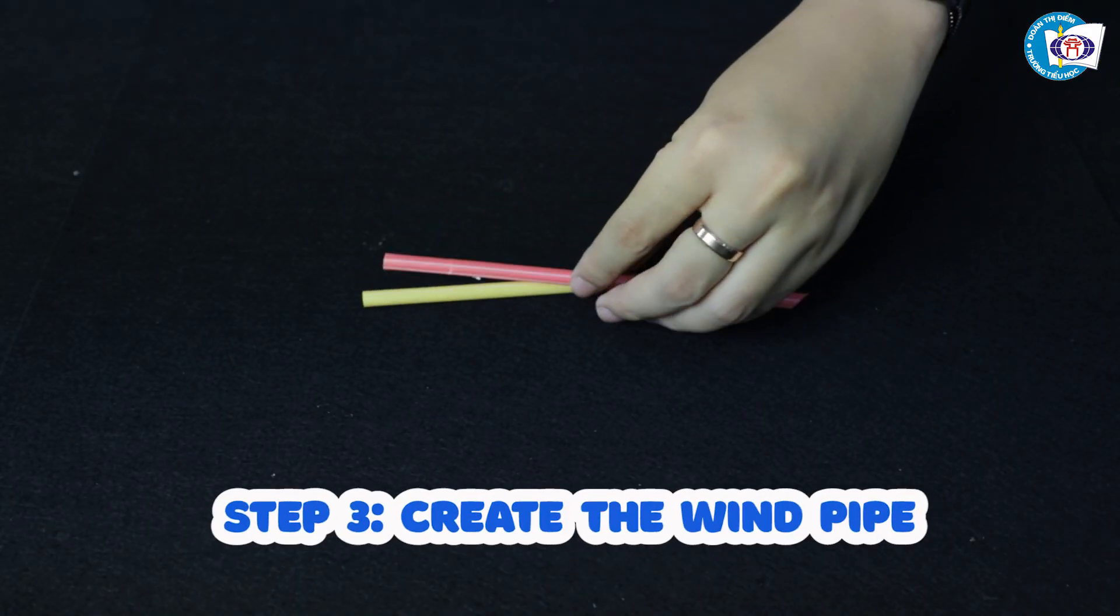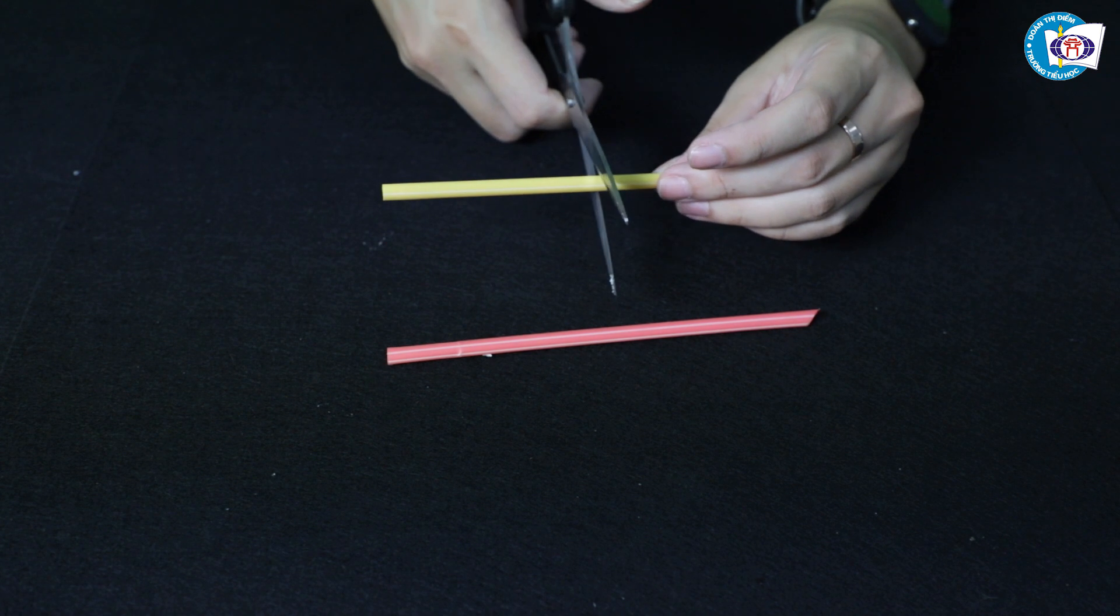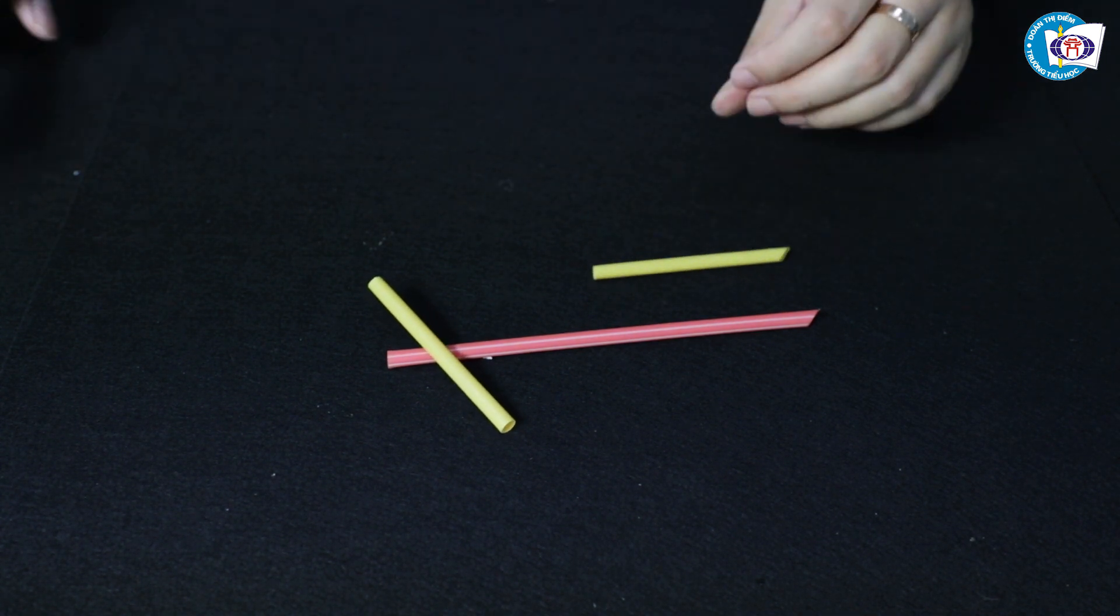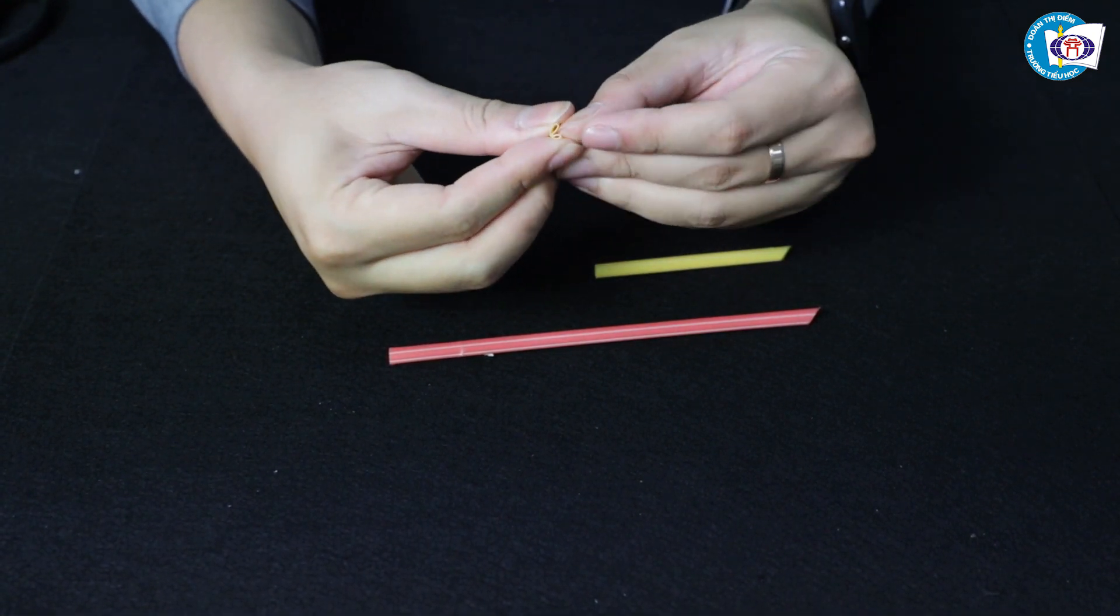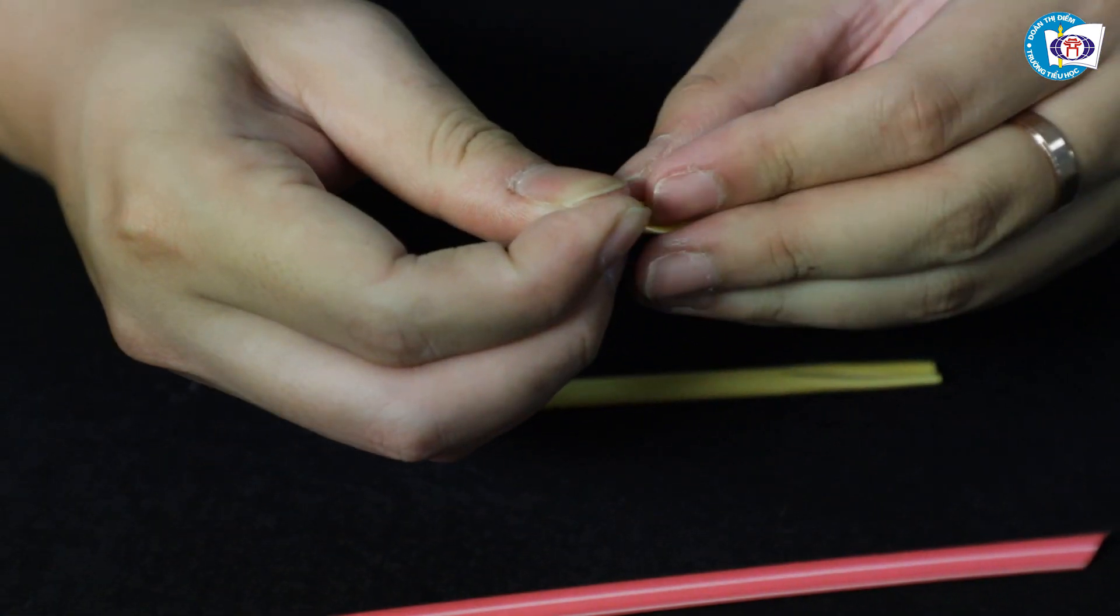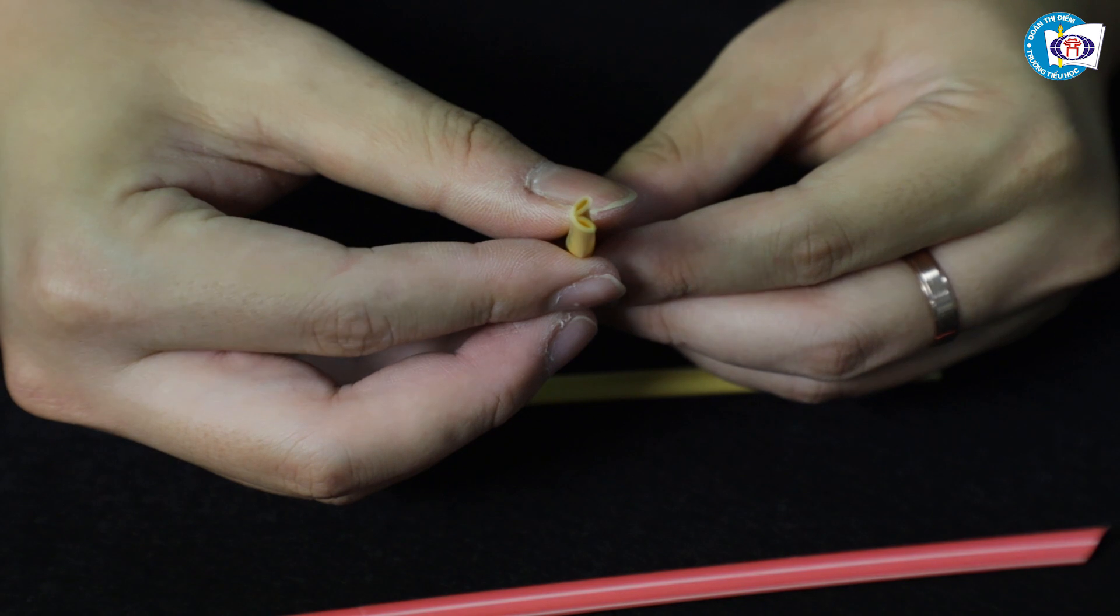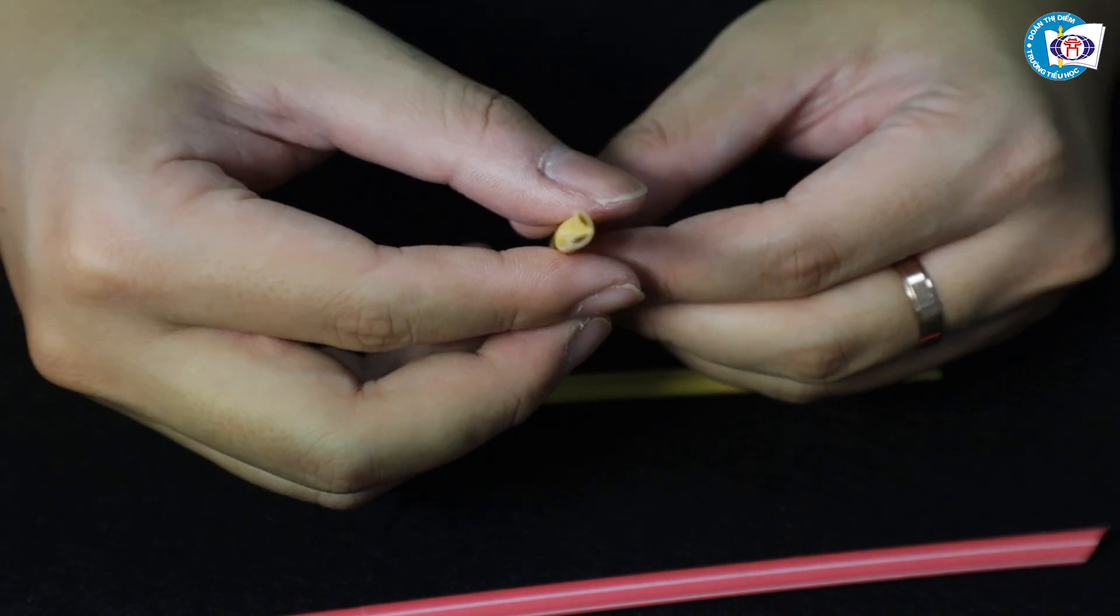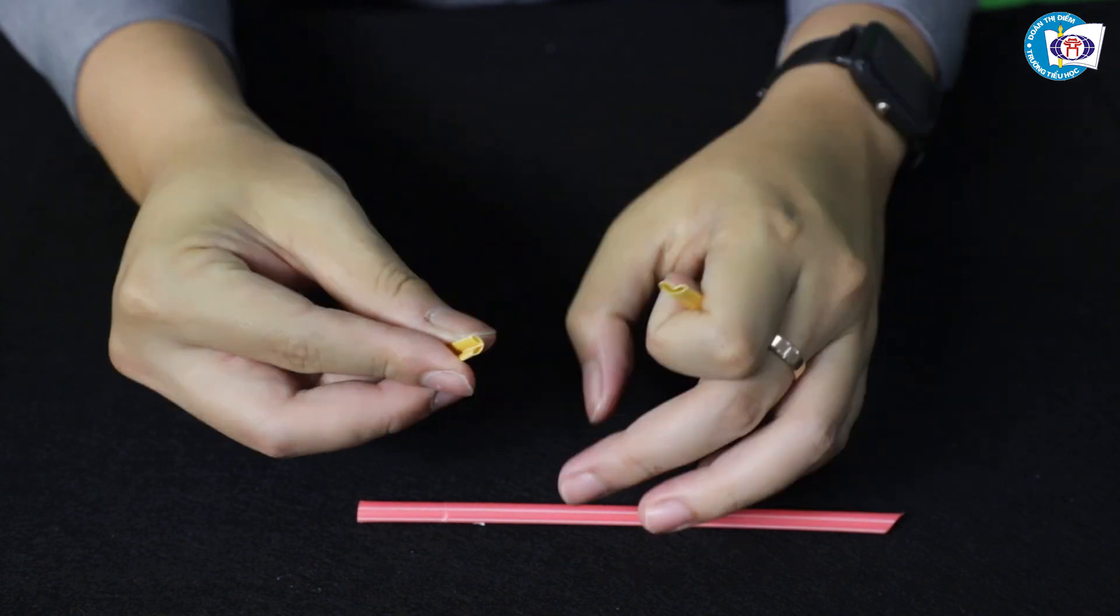Step 3: Cut and tape the straws to make the windpipe. Get 2 straws. Cut one in half, creating 2 short straws. Fold the tip of the short straws in half. Insert the 2 short straws with folded tips into the normal straw to create the windpipe.